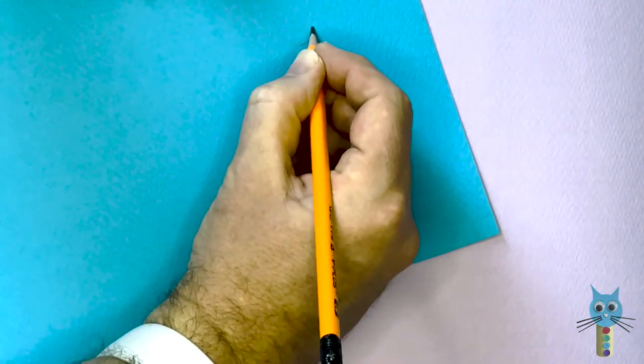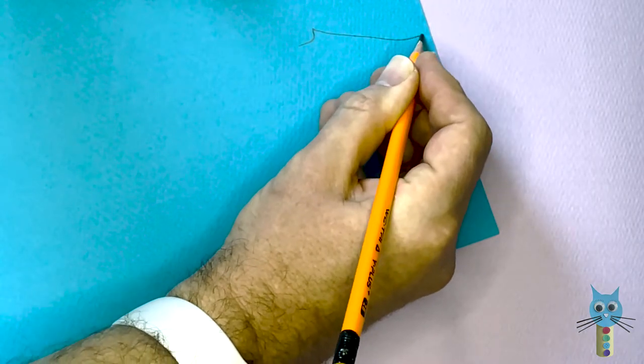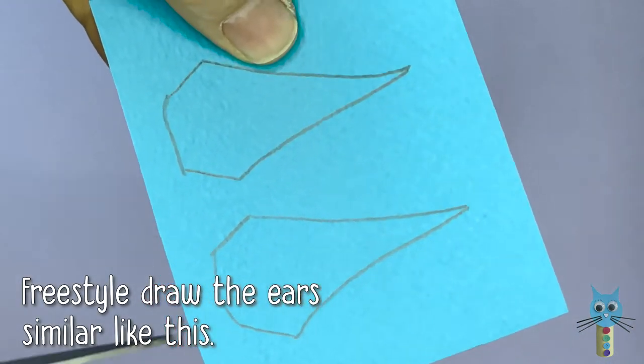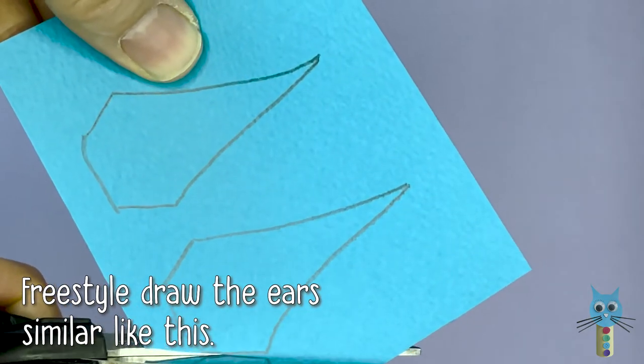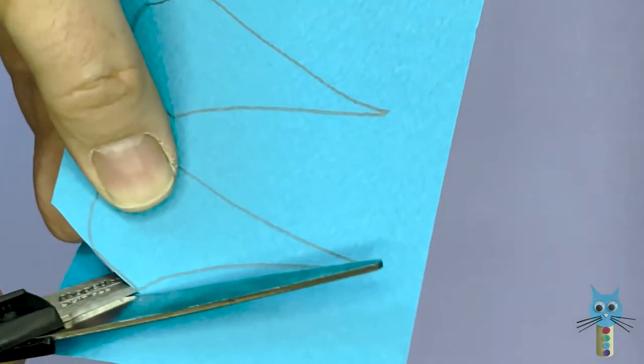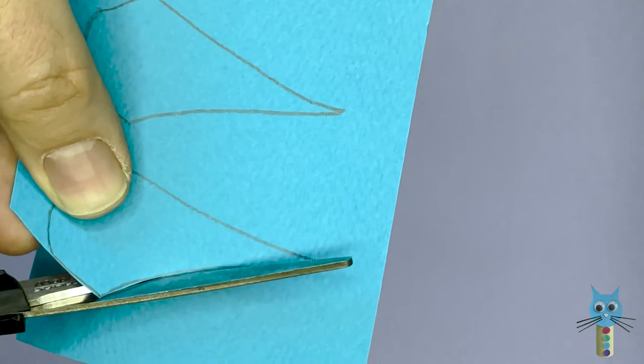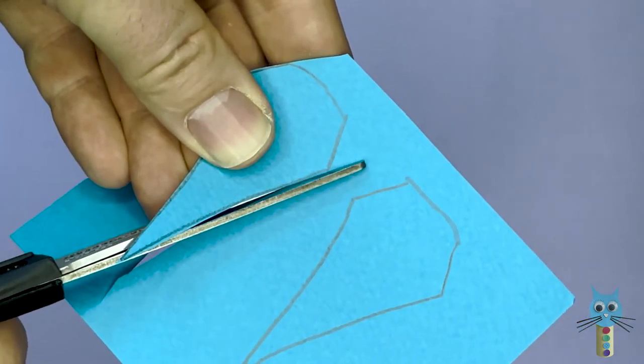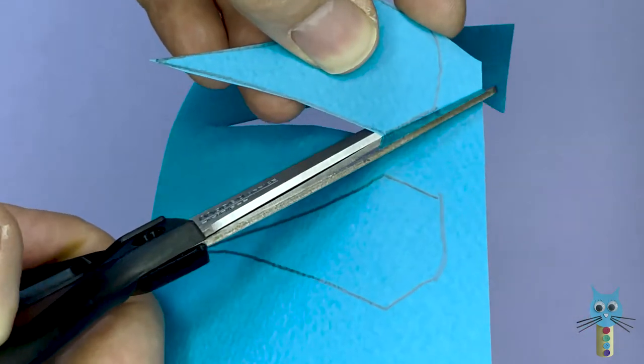Next thing, I need some ears. So take some blue paper or card that is the same color, and just draw out a template for the ears. You can make them any shape or size you want. Try and draw them so they are similar sizes and similar shapes, and then go ahead and cut out those ears.